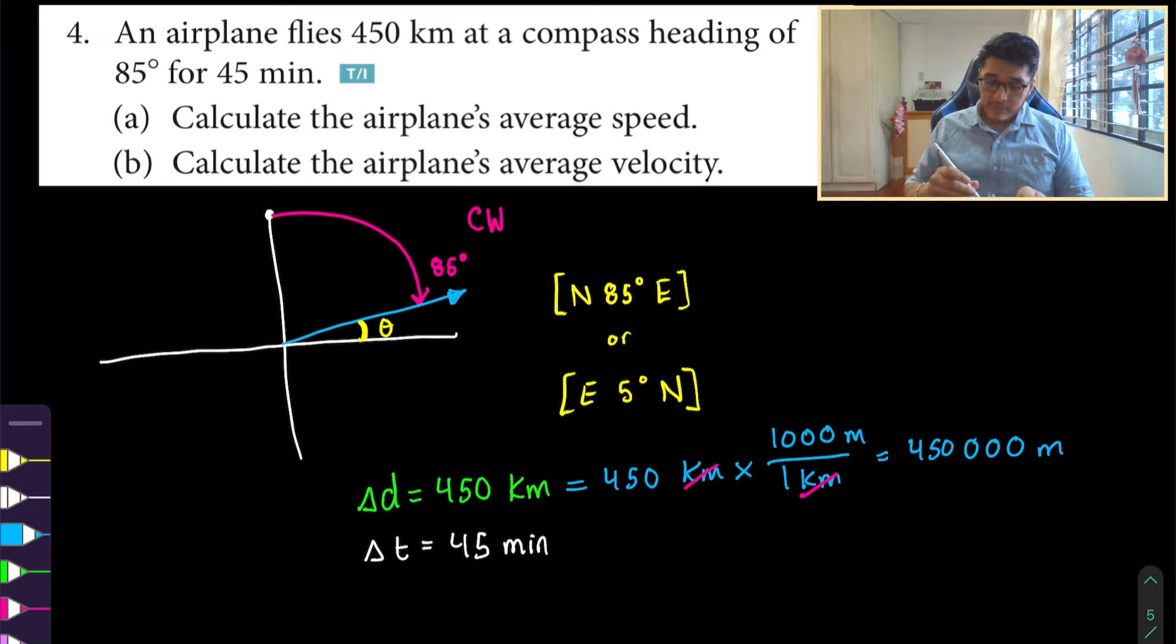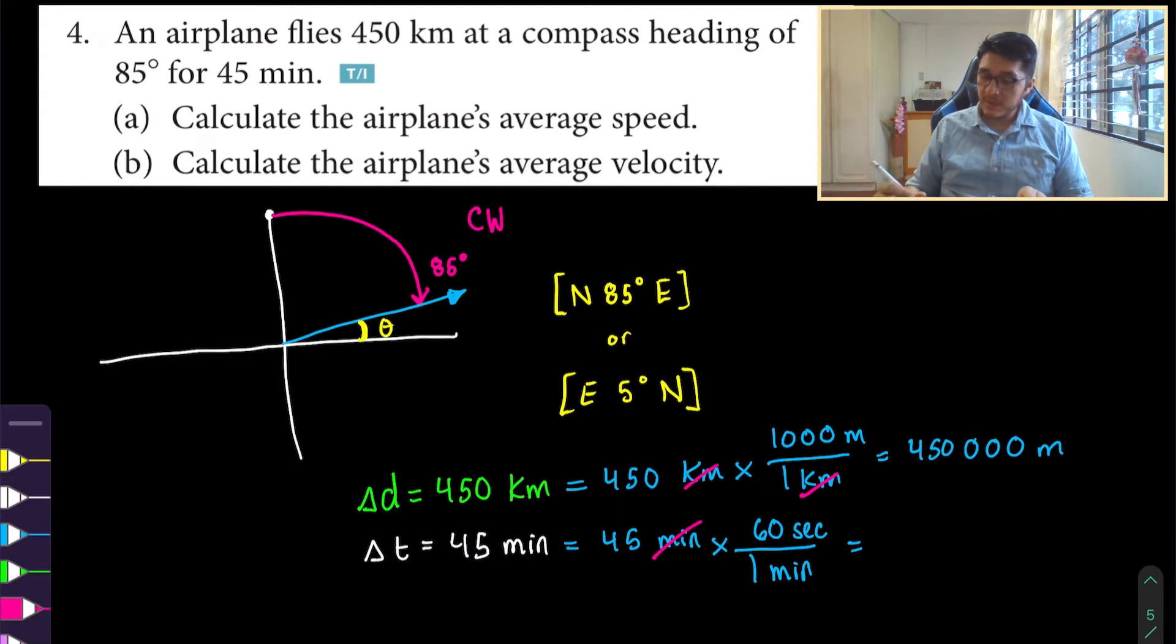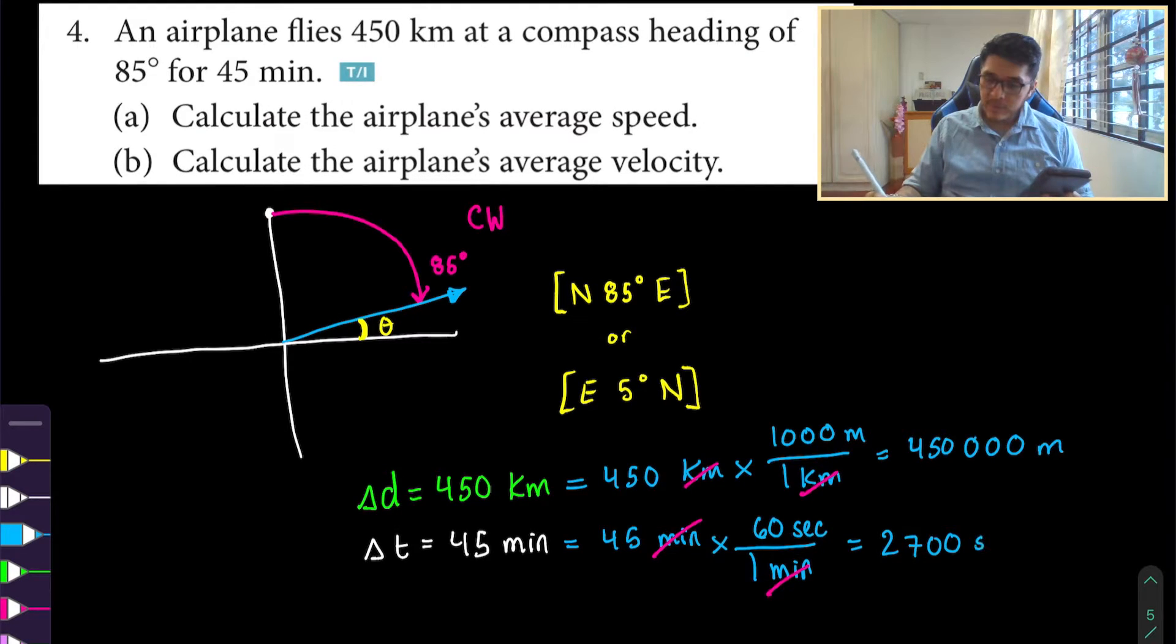Now to convert minutes, we want to cancel out the units of minutes. So we put it in the bottom. And in one minute, there are 60 seconds. Just make sure that the units of minutes cancel out. And we're left with 45 times 60, which is 2,700 seconds.